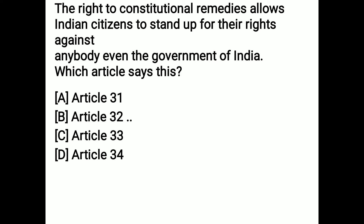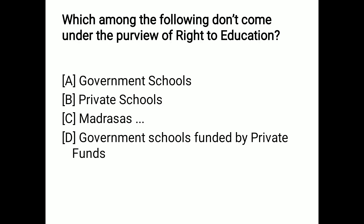Right to constitutional remedies allows Indian citizens to stand up for their rights against anybody, even the government of India. Which article says this? Options are Article 31, 32, 33, or 34. Article 32 is the right to constitutional remedy. Dr. B.R. Ambedkar called Article 32 the soul of the constitution. Option B is the correct answer.